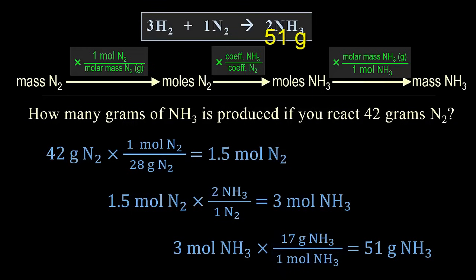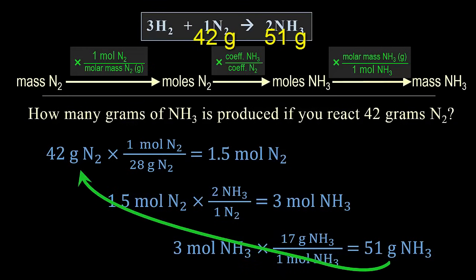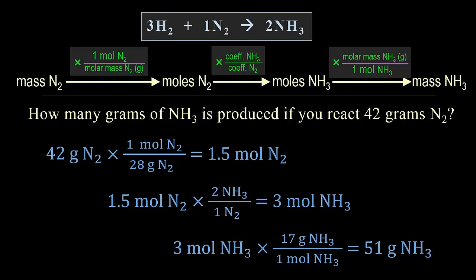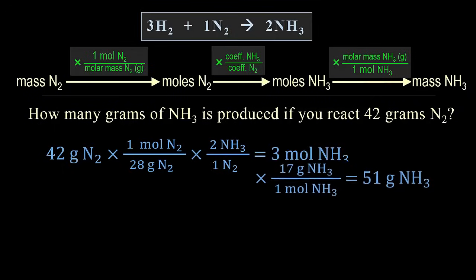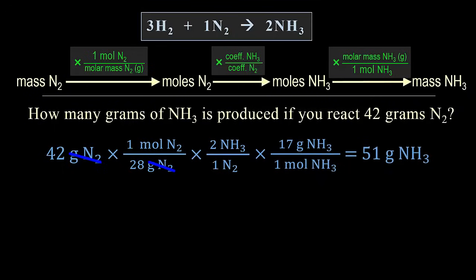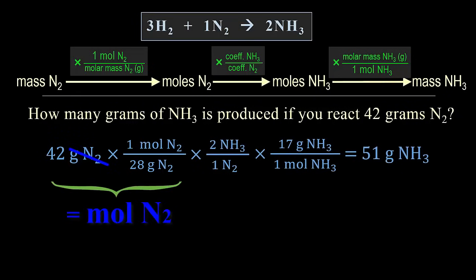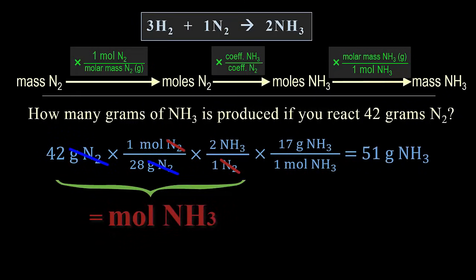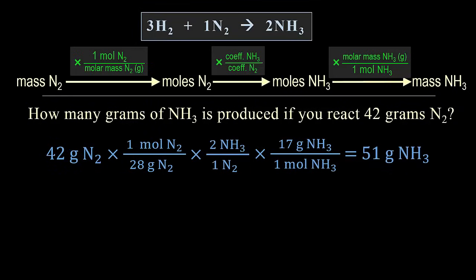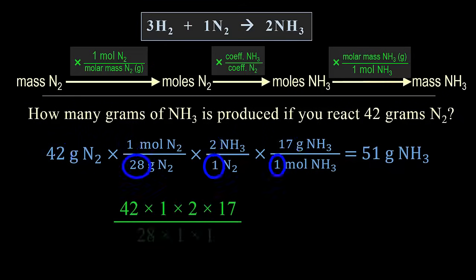So 51 grams of NH3 will be produced from the complete reaction of 42 grams of N2. Normally with stoichiometry, as in dimensional analysis, we can more efficiently write the calculations in a chain. As in any correctly written dimensional analysis, all unwanted units cancel and the wanted unit is the one you are left with. If the units don't cancel, you are setting it up incorrectly and will get an incorrect answer, so you will need to go back and review the conversions. Once it is set up correctly, what you are putting in your calculator is simply multiplying all numbers in the numerator and dividing by everything in the denominator.